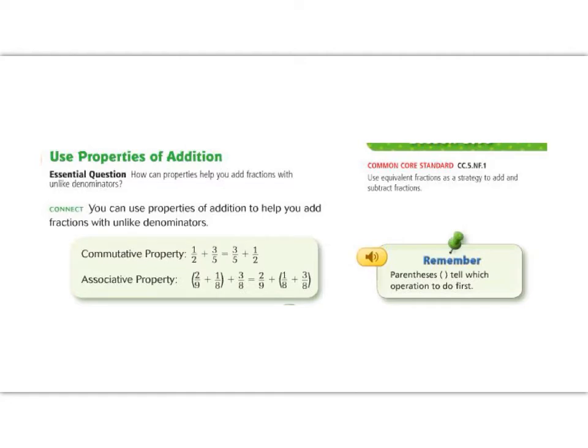The two properties that we are going to talk about today are the commutative property and the associative property. The commutative property allows me to move my numbers around. So you can see here, I went from having 1 half plus 3 fifths, and then I flipped them, now I have 3 fifths plus 1 half. The commutative property we think of like a little car, so I'm going to draw a steering wheel, where you can drive your numbers around to different places, and you'll still get the same answer.